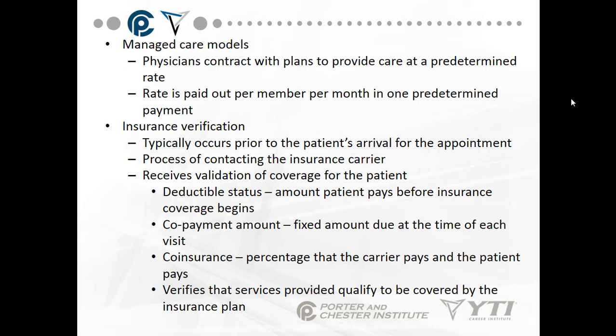For example, if your deductible is $1,000 every year and you've already paid that $1,000 for healthcare, the next time you go to your doctor, your insurance benefits will begin to be applied. If your insurance benefits are 80% paid by the insurance company and 20% paid by you, your co-insurance is 20% of the bill. This validation also verifies that services provided qualify to be covered by the health insurance plan.